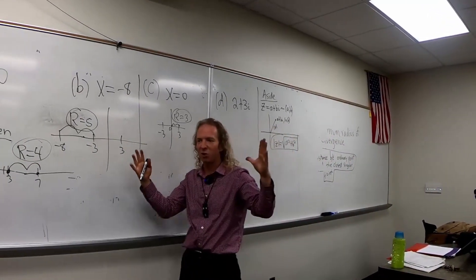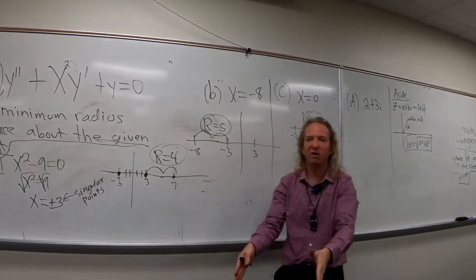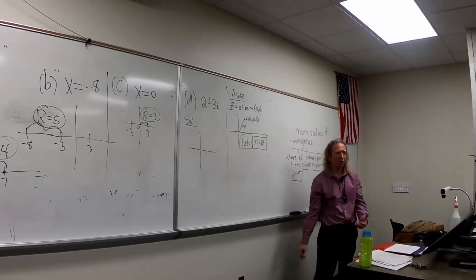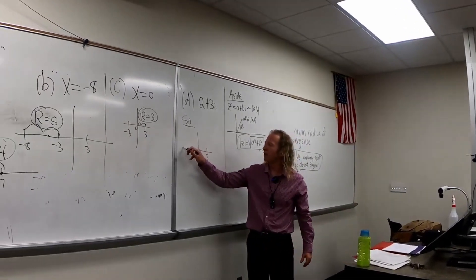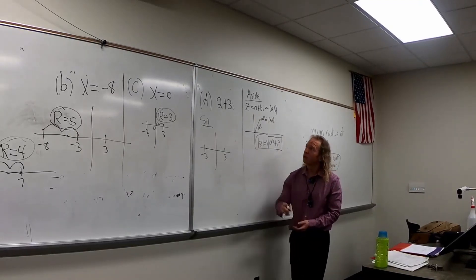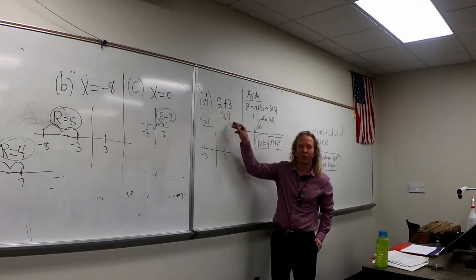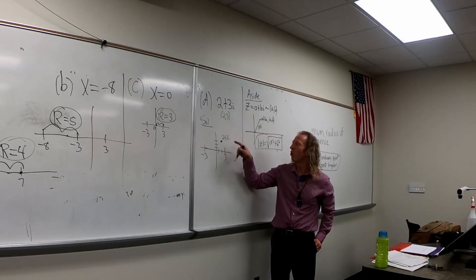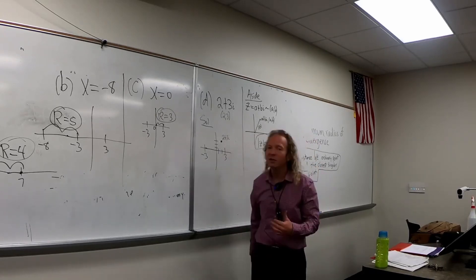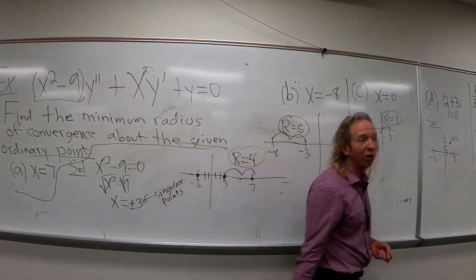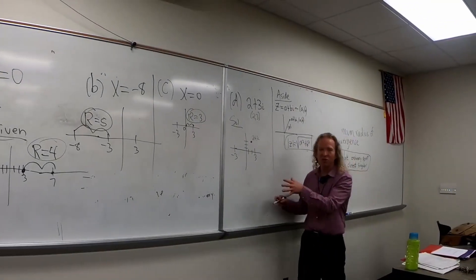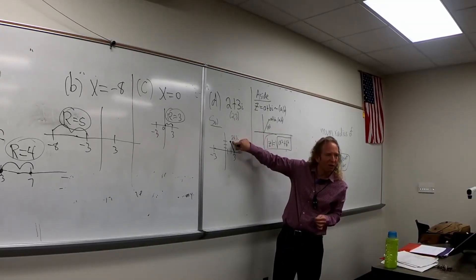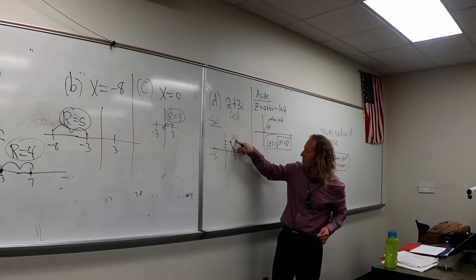So if you have two complex numbers and you're trying to find the distance between them, you just subtract them and then put those modulus bars there. We first plot our singular points — three and negative three. Then we have to plot our complex number. Think of it as an ordered pair: two comma three. So you go right two and up three — there's our complex number, two plus three i. Which one is going to be closer — three or negative three? Three. Just by looking at the picture, three is the closer singular point, so we have to find that distance. That's going to be our R.